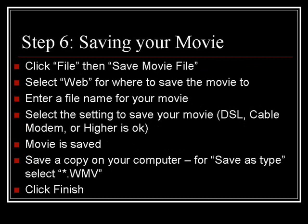Now you need to save your movie. Click on File, then Save Movie File. Select the web for where you want to save it to, enter a file name for it, and select the setting — DSL Cable Modem or higher is fine. Your movie is then saved. It also prompts you to save a copy on your computer, and for Save As Type, select WMV, and then click Finish.